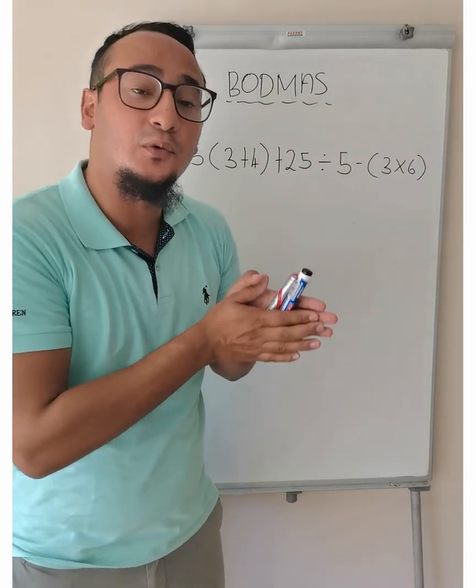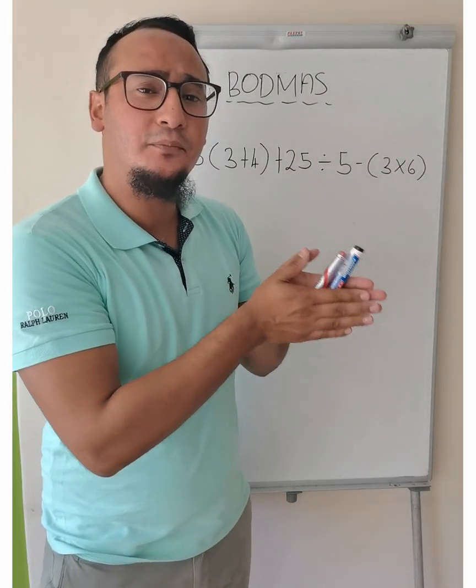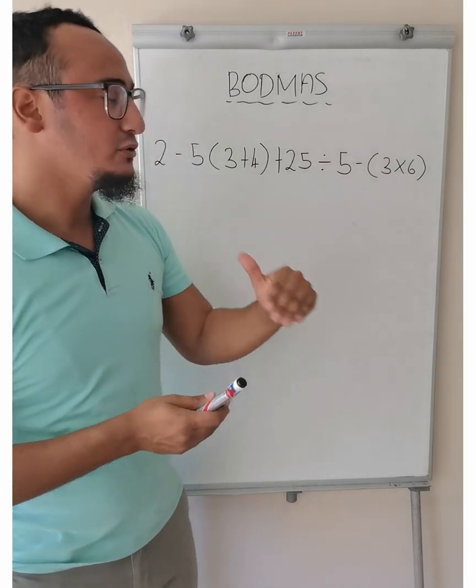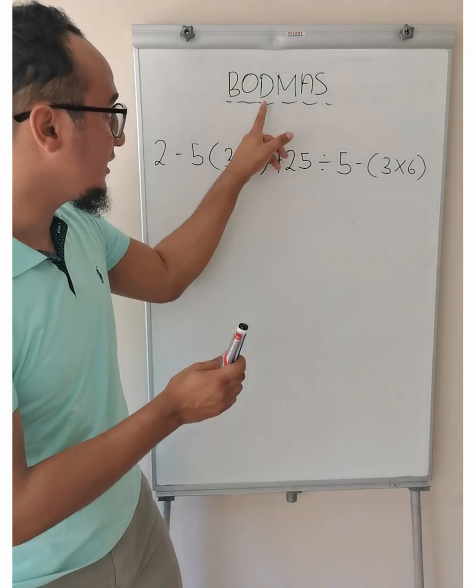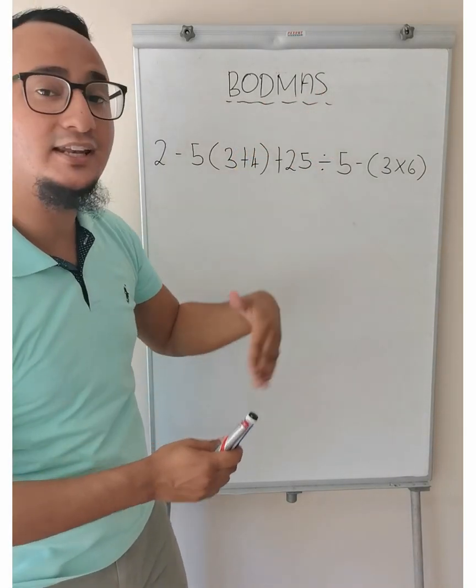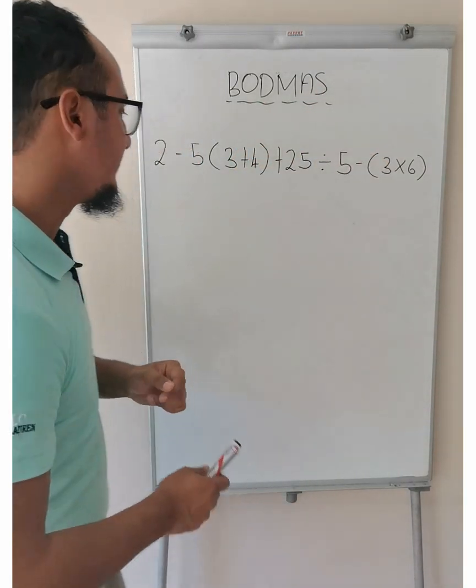Now, what does this mean? Whenever you are busy with a sum, make sure you follow this order. In other words, division and multiplication comes before addition and subtraction. So, let's begin.